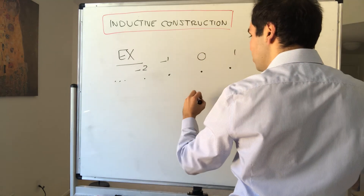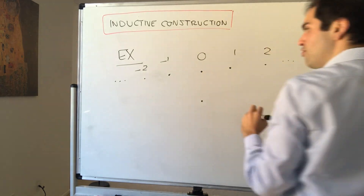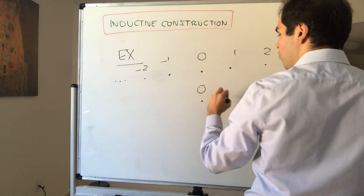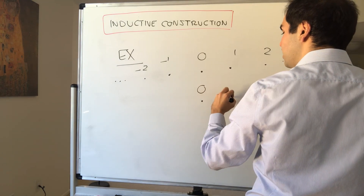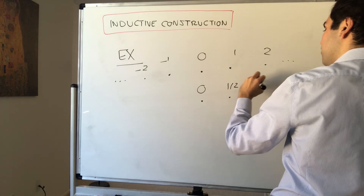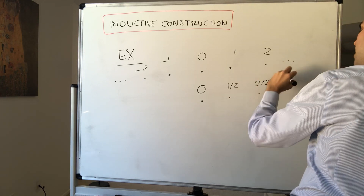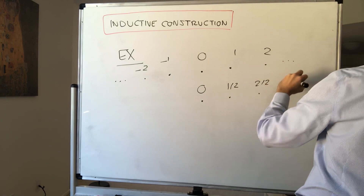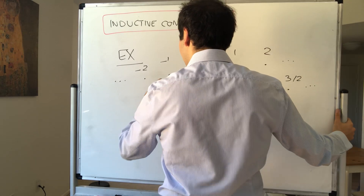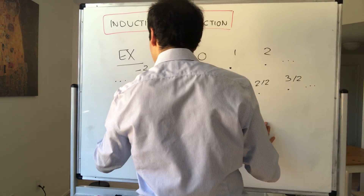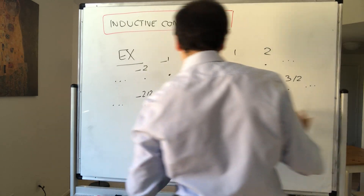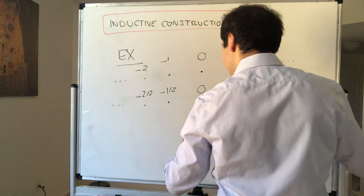In the second row we'll put all the fractions with denominator 2. So 0, 1/2, 2/2, 3/2, and so on, but also −1/2, −2/2, −3/2, etc.